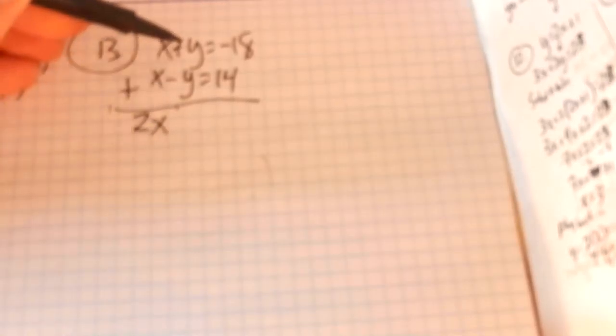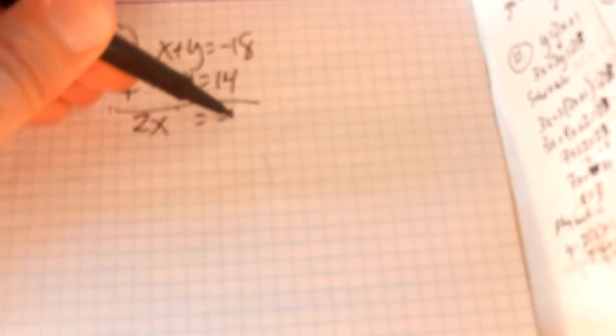x plus x is 2x. y minus y is 0. Notice the y's drop out of the equation, which is what I want to happen. Negative 18 plus 14 is negative 4.